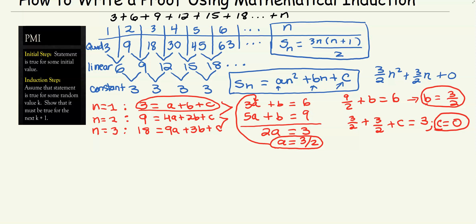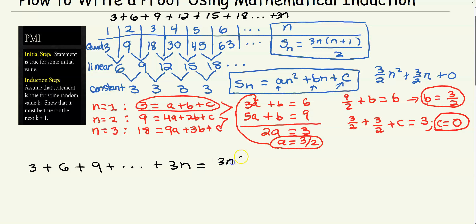I started out saying I'm going to show you how to write a proof. Someone might be skeptical and say: if you tell them 3 + 6 + 9 + … + 3n equals 3n(n+1)/2, they'd say 'prove it for all natural numbers n.'